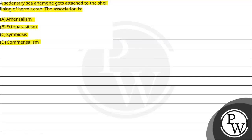Question में पूछ रहे हैं कि जो sedentary sea anemone होता है, यह attach होता है to the shell lining of hermit crab. So इस association को क्या बोलते हैं? The key concept here is commensalism.